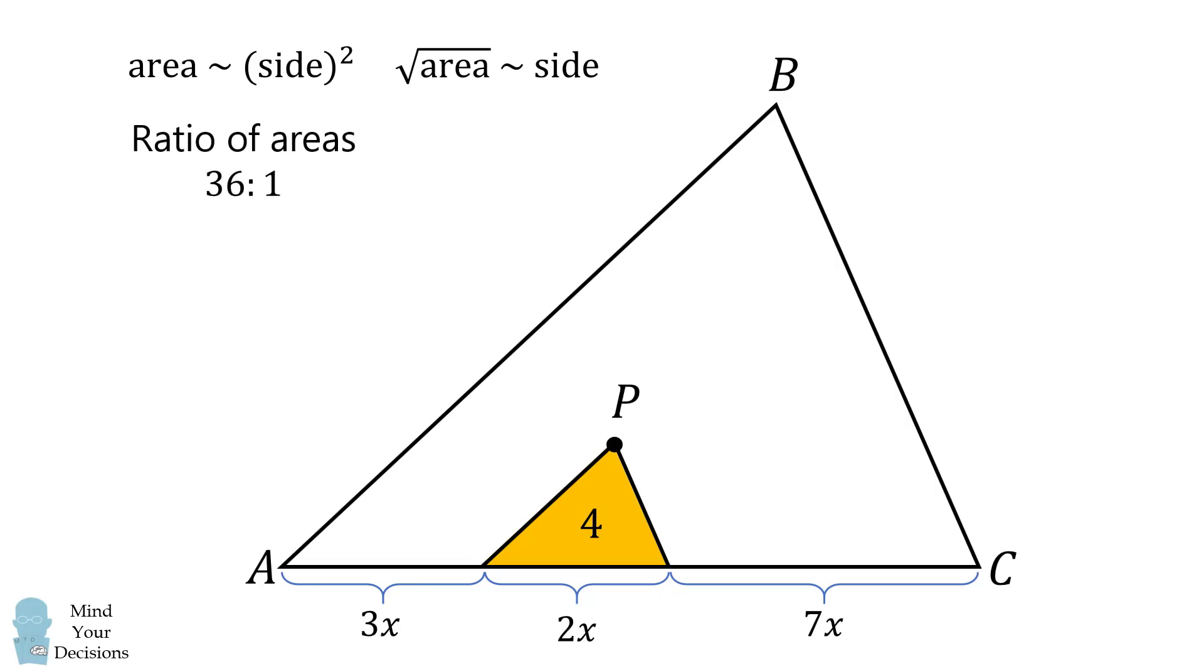And now we can calculate the answer. The area of triangle ABC will be 36 times 4, and therefore the answer is 144.